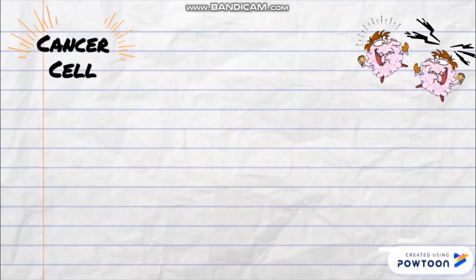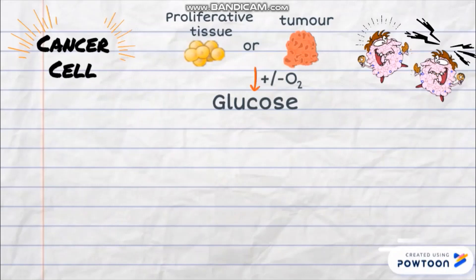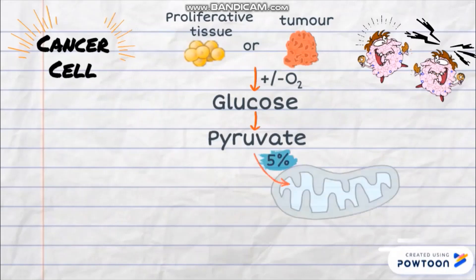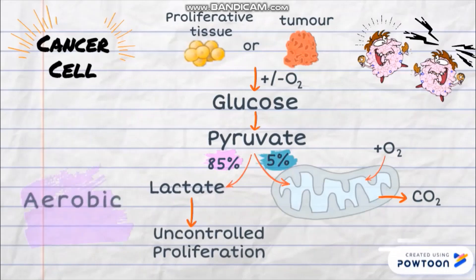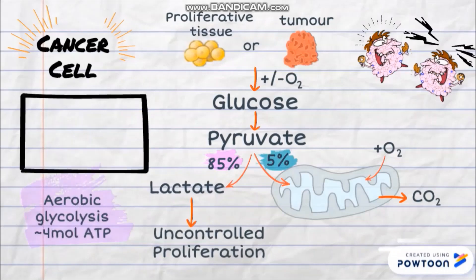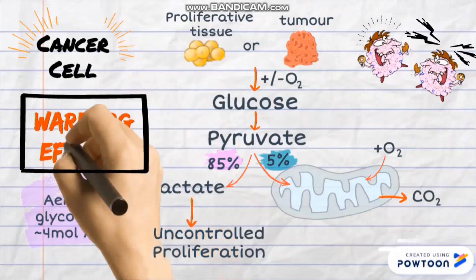In proliferating or tumor cells, there is an increased uptake of glucose which increases the rate of glycolysis regardless of whether oxygen is present. Only a small amount of pyruvate enters the mitochondria, and most of the pyruvate undergoes lactic acid fermentation, causing uncontrolled proliferation of cells. This phenomenon is known as aerobic glycolysis — the Warburg effect.